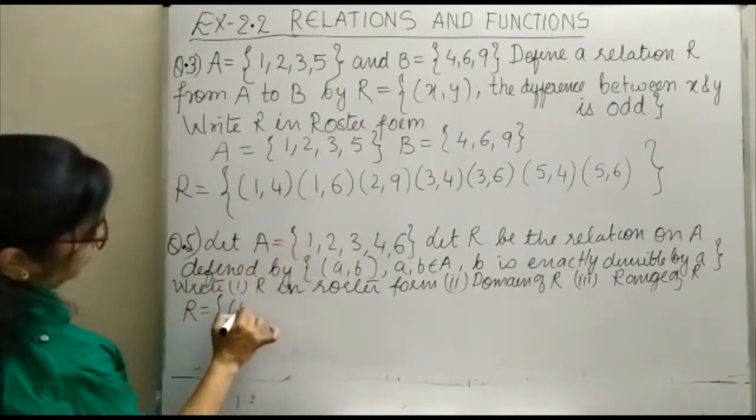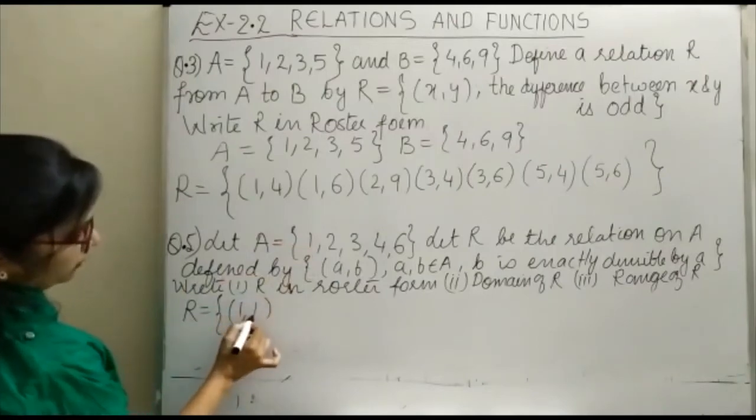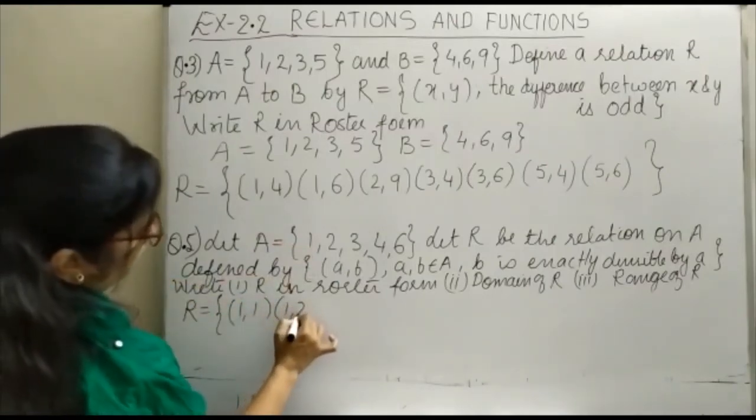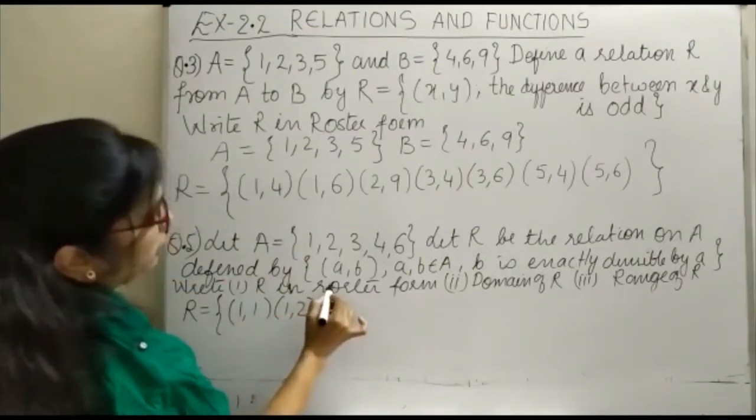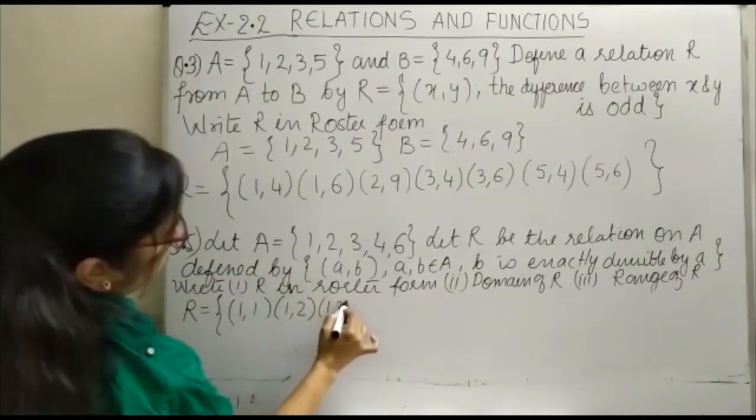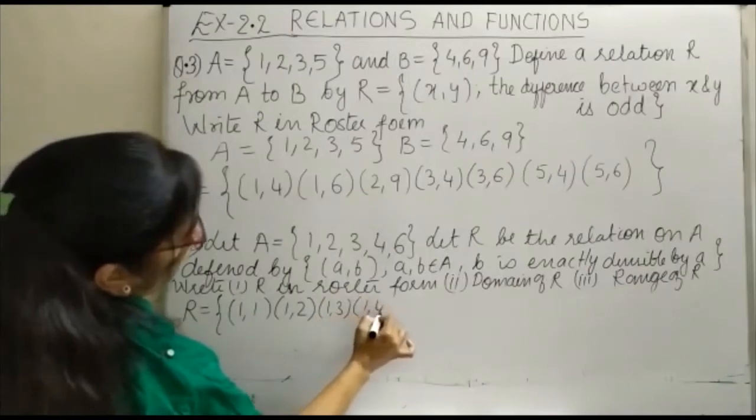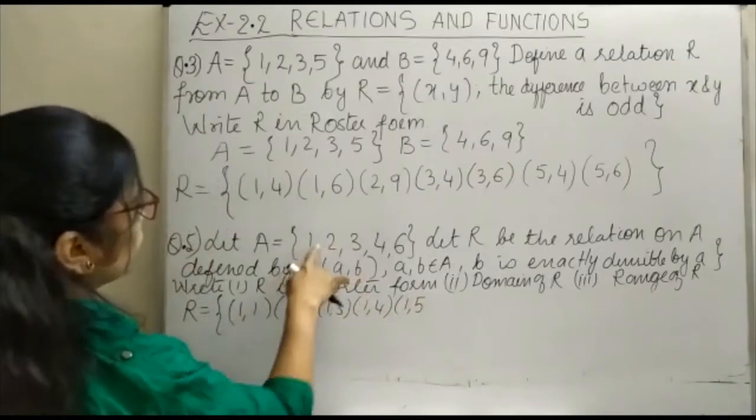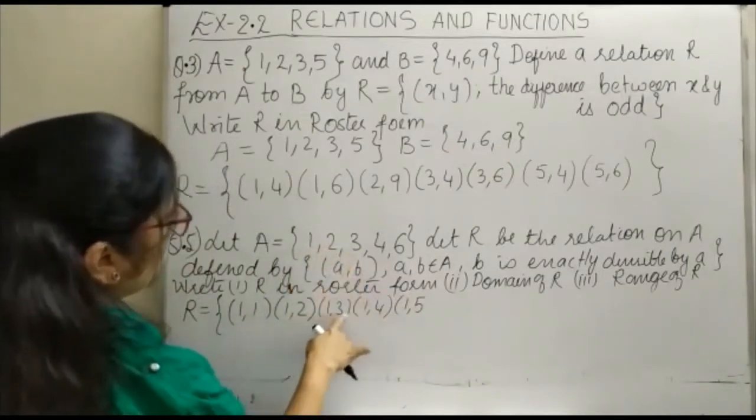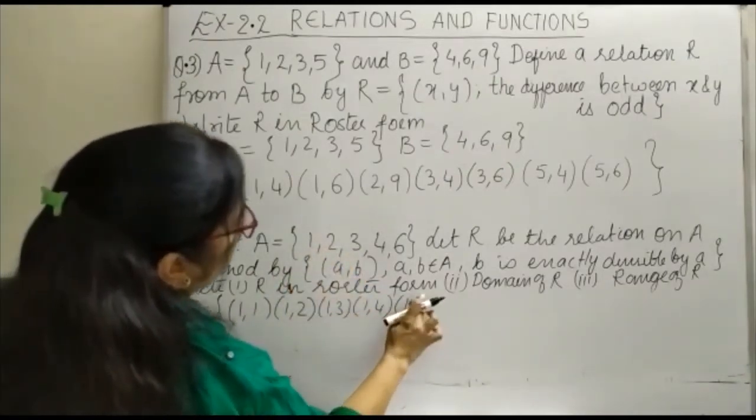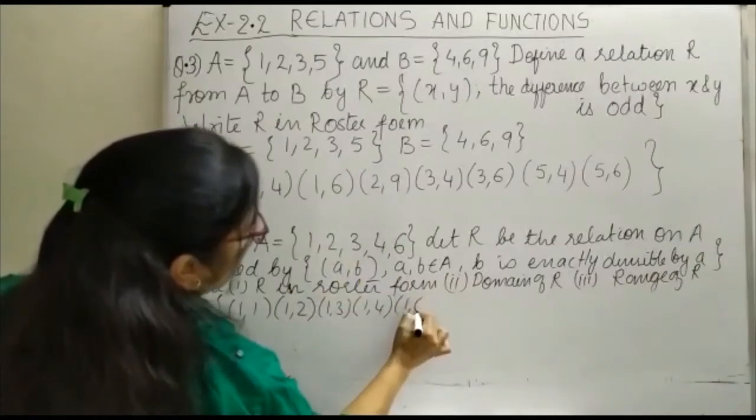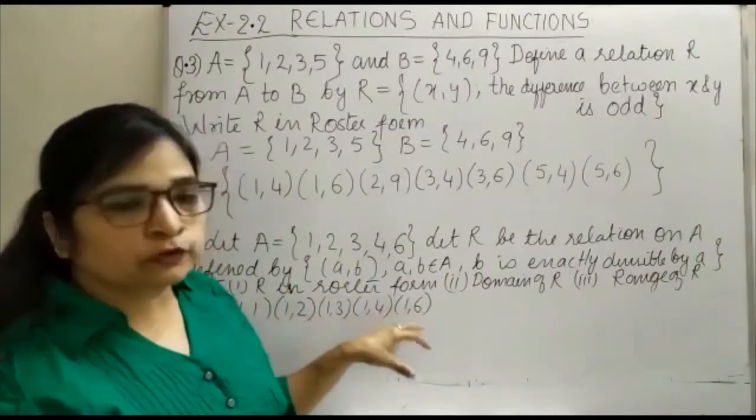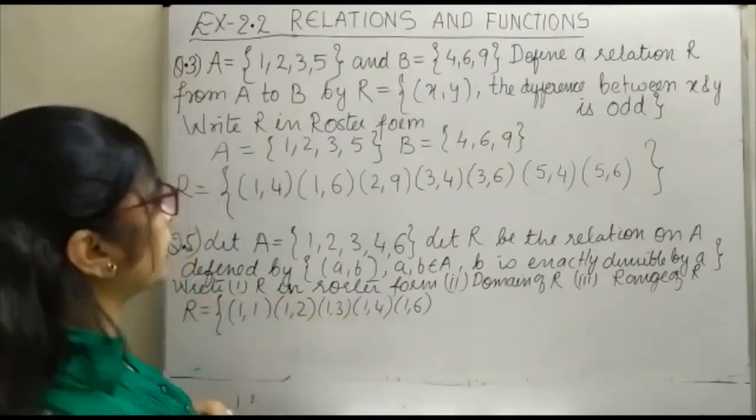(1,1) will come because 1 is divisible by 1. Again, 1 divides everything, so with 1 you can make all pairings: (1,1), (1,2), (1,3), (1,4), and (1,6). As you know that 1 divides 1, 2, 3, 4, 6, so with 1 all pairs will come.